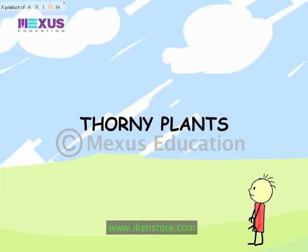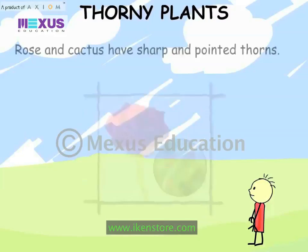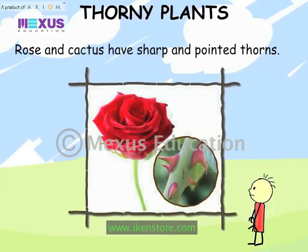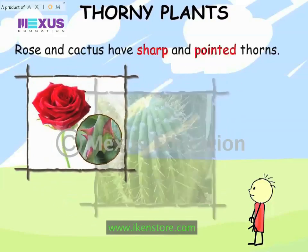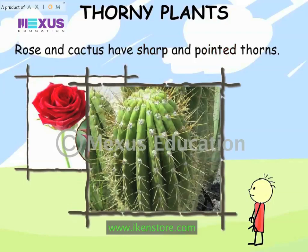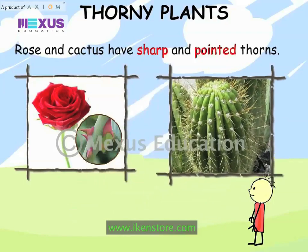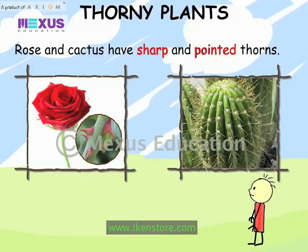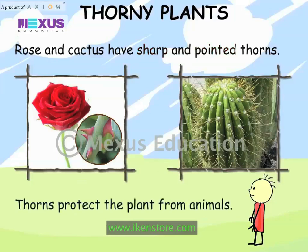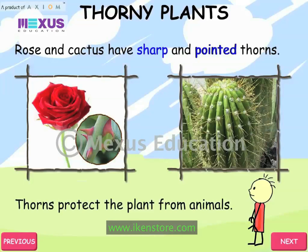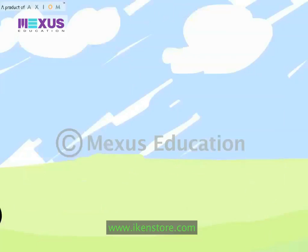Thorny plants. Rose and cactus have sharp and pointed thorns. Thorns protect the plant from animals.